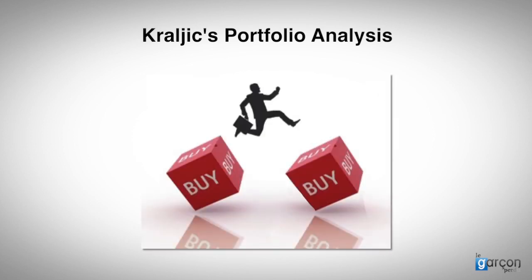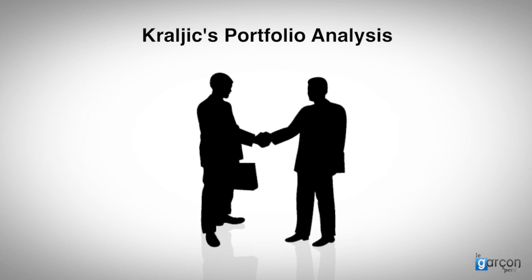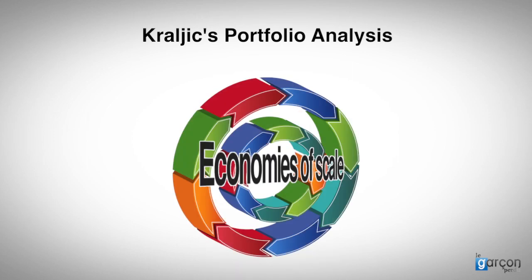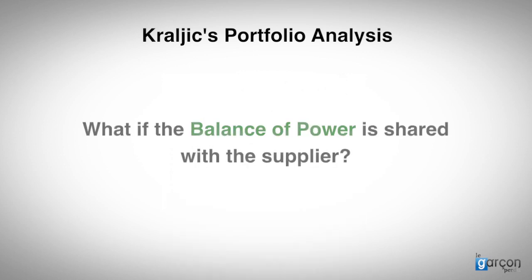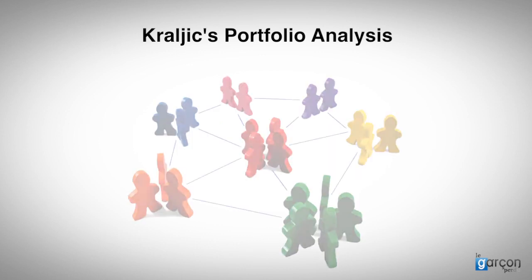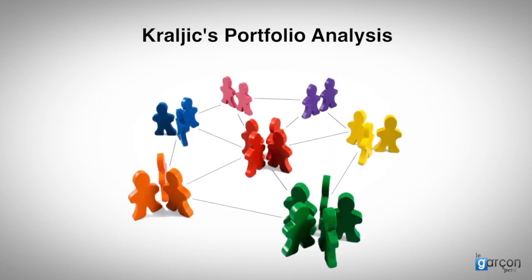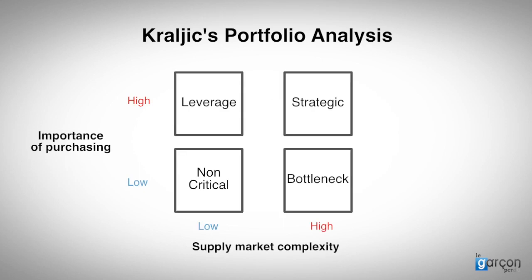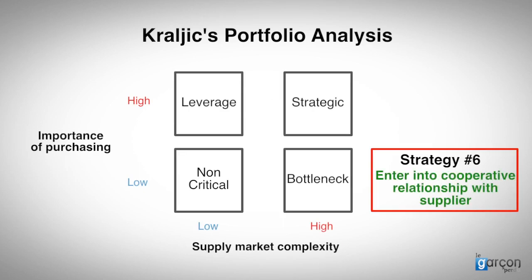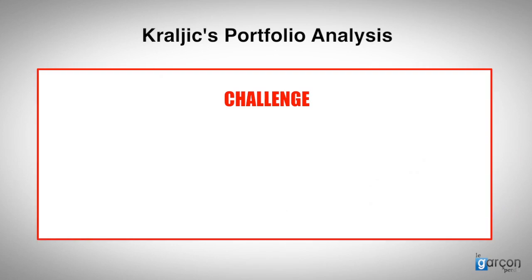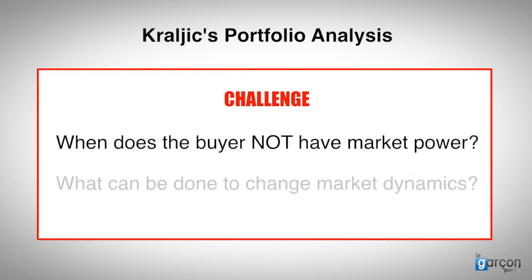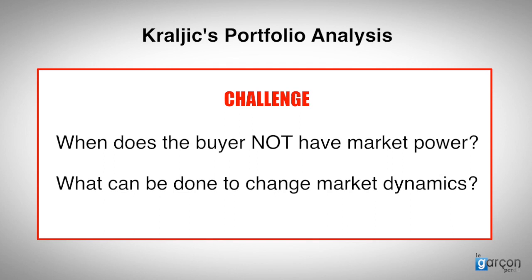Interestingly, the pure application of Kralich's ideas would suggest short-term spot buying rather than longer-term contracts. But most procurement strategies seek to achieve economies of scale through entering into longer-term arrangements. But what if the balance of power was shared with the supplier? If that was the case, the buyer could enter into a cooperative relationship with the supplier. This would be strategy six, but in my experience it's very rare. The challenge of supply-market analysis is to understand when the buyer does not have market power and to understand what may be done to change the market dynamics.